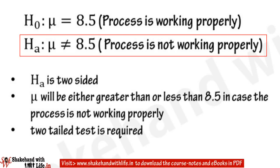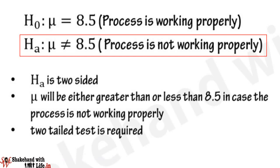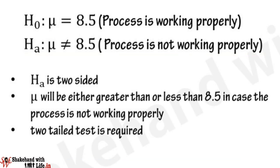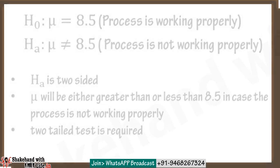If the mean length of the rods is less than or greater than 8.5 inches, then the process is considered as not working properly. The alternative hypothesis is two-sided — it implies population mean is less than or greater than type — and hence a two-tail test is required in this case.